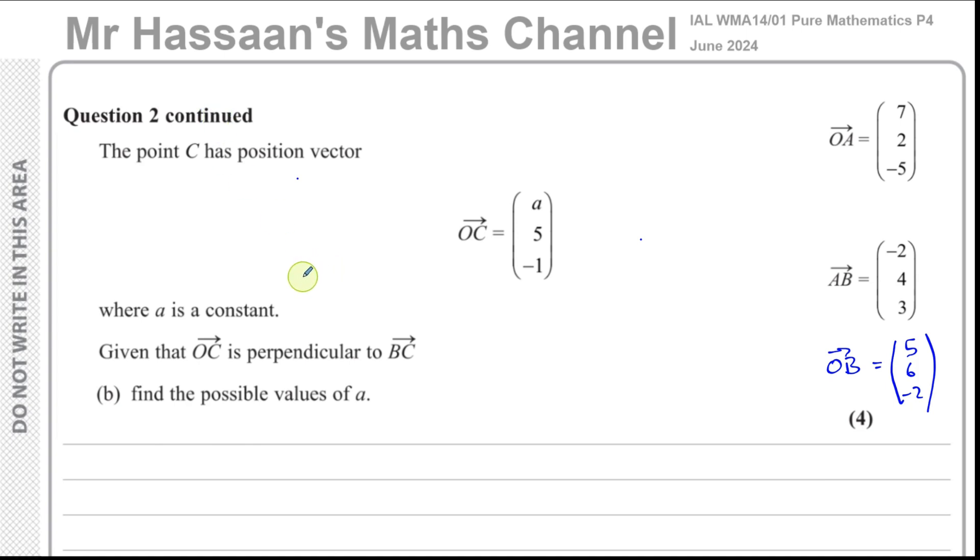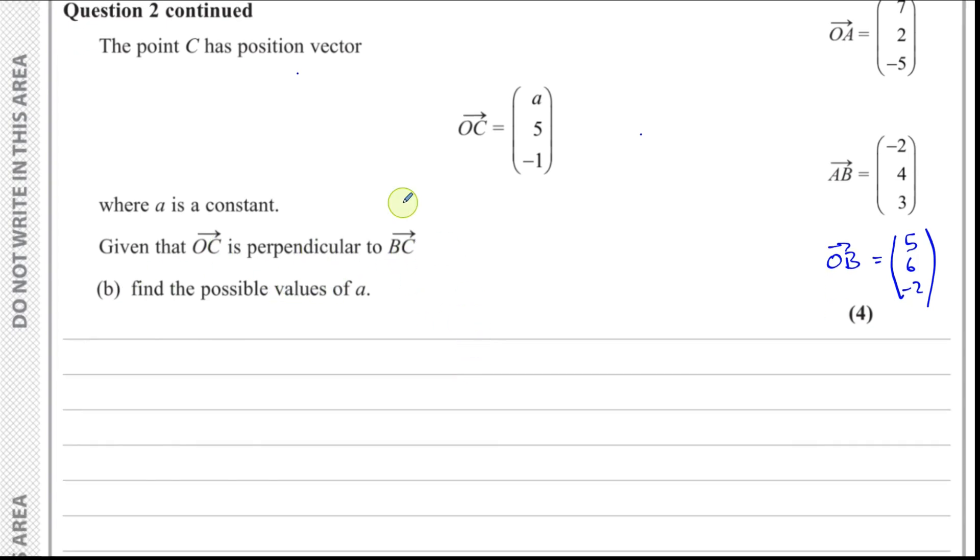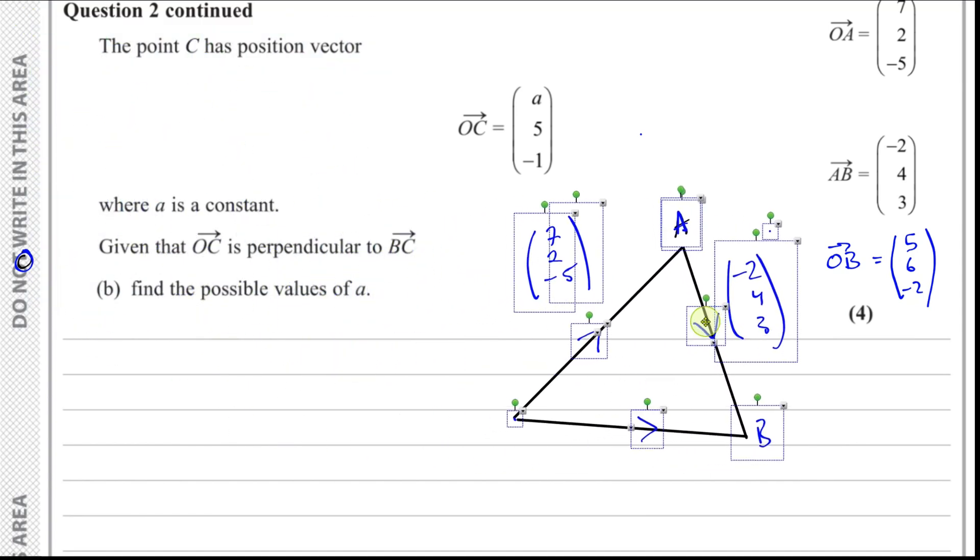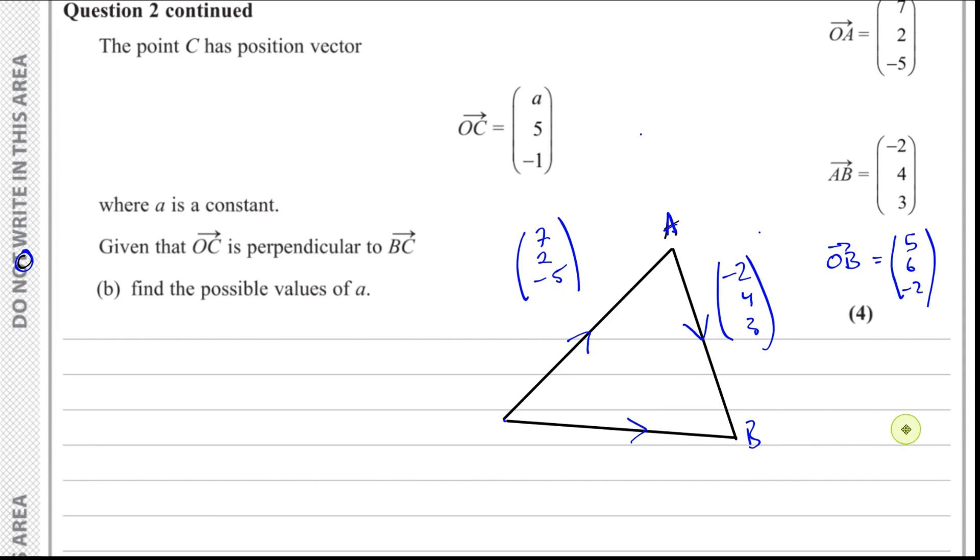Now for part B, it says the point C has position vector OC equals a, 5, minus 1, where a is a constant. Given that OC is perpendicular to BC, find the possible values of a. So again, visualizing this will be very useful. I'm going to just take what we had from before.